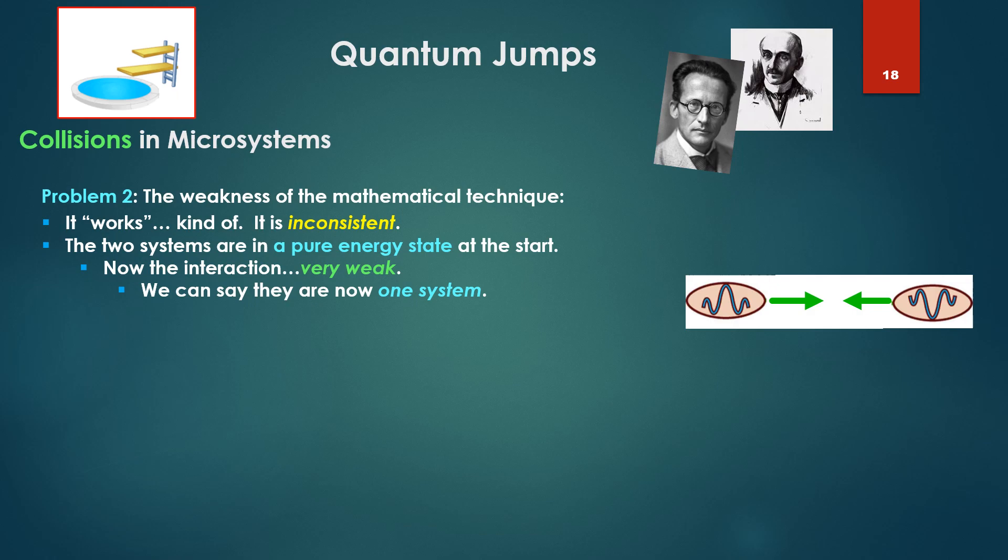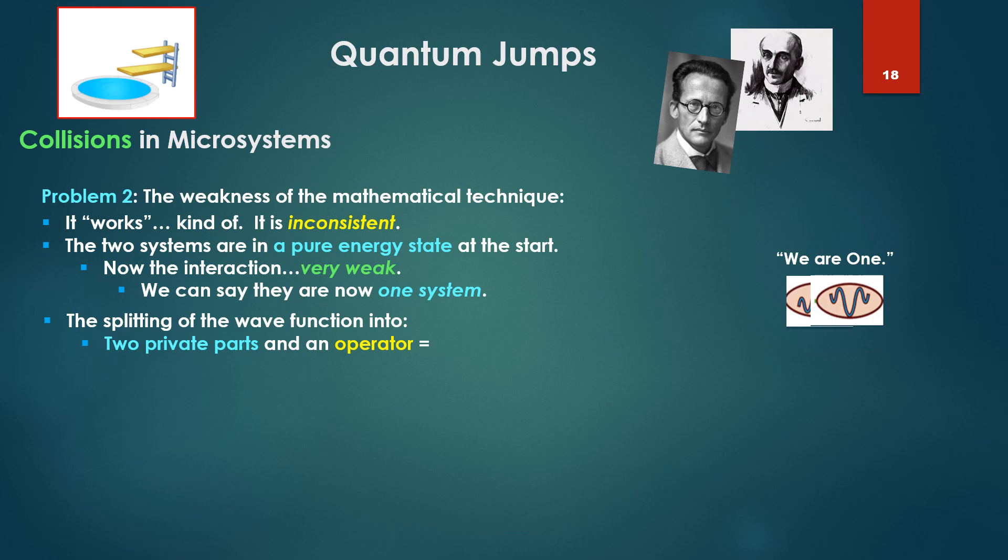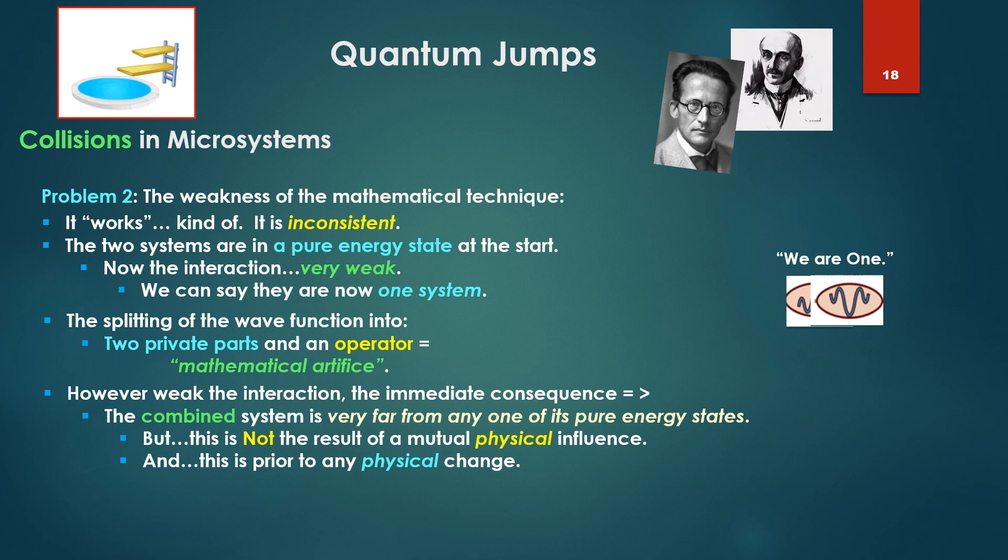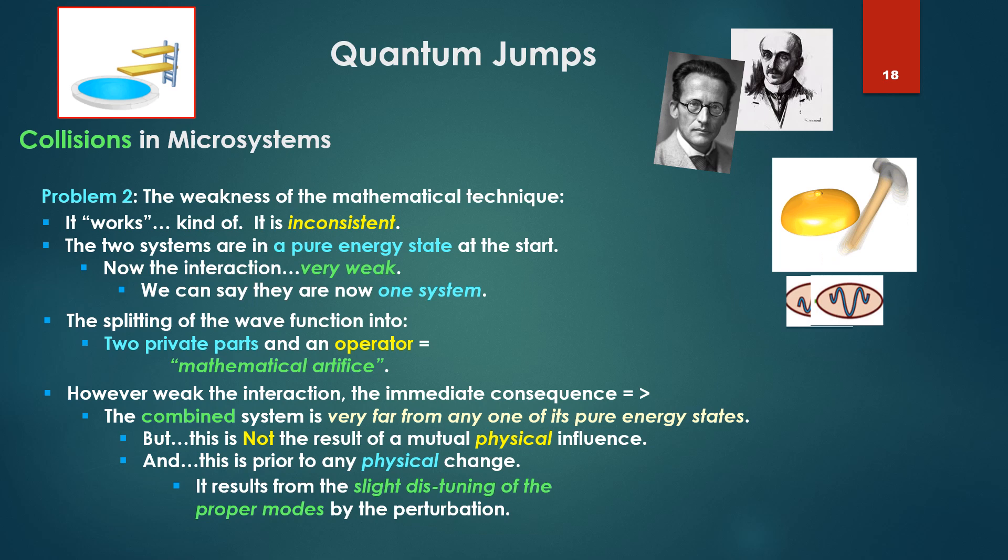The two systems are in a pure energy state at the start. Now the interaction, very weak. We can say they are now one system. The splitting of the wave function into the two private parts or the two separate systems and an operator equals a mathematical artifice. However weak the interaction, the immediate consequence: the combined system is very far from one of its pure energy states. But this is not the result of a mutual physical influence, and this is prior to any physical change. It results in the slight detuning of the proper modes by the perturbation.